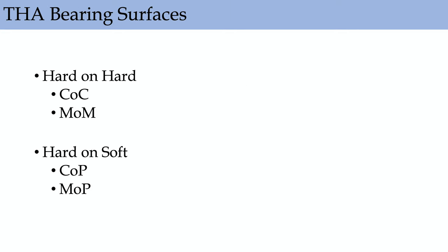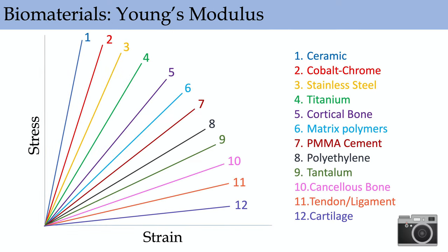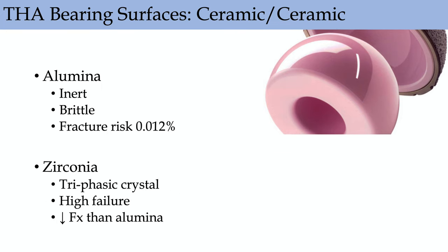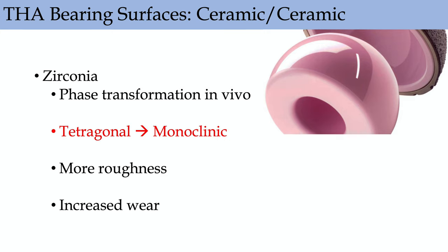Bearing surfaces: hard-on-hard — ceramic on ceramic, metal on metal — and hard on soft — ceramic or metal on poly. The Young's modulus chart: ceramic has the highest modulus; titanium is close to cortical bone, which is why femoral stems are made of titanium; cobalt-chrome is harder and farther from cortical bone, causing stress shielding. Ceramic on ceramic is typically reserved for younger patients and has the lowest wear profile. Ceramic fracture is rare — about 1 in 10,000. Stripe wear is due to micro-separation of the head from the socket; squeaking occurs in about 1% of patients. Aluminum oxide ceramic is now preferred — inert, brittle, very low fracture risk. The original zirconia ceramics had high failure due to phase transformation from tetragonal to monoclinic phase in vivo.